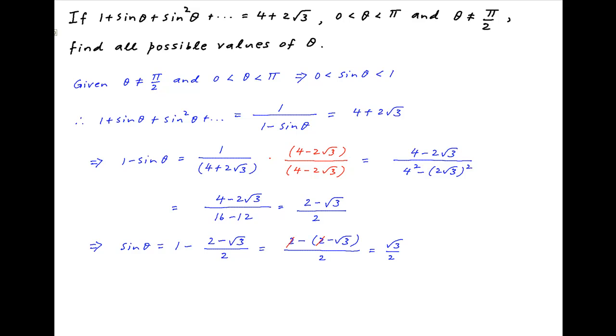Now since theta lies in the open interval between 0 and π, therefore there are two values of theta that satisfy the condition sin θ = √3/2. The first is that θ = π/3 and the second is that θ = π - π/3 which is 2π/3.